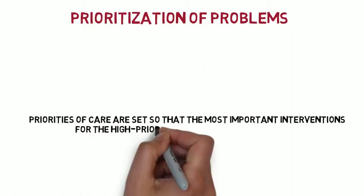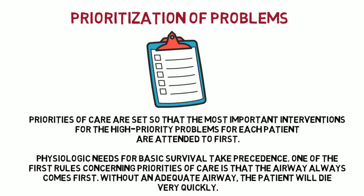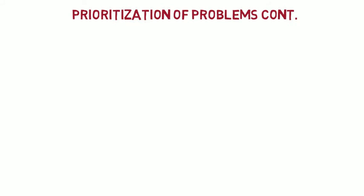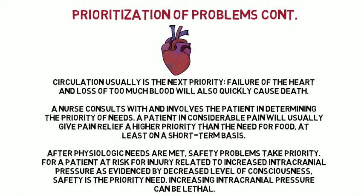Prioritization of problems. Priorities of care are set so that the most important interventions for the high-priority problems for each patient are attended to first. Physiologic needs for basic survival take precedence. One of the first rules concerning priorities of care is that the airway always comes first — without an adequate airway, the patient will die very quickly. Circulation is usually the next priority; failure of the heart and loss of too much blood will also quickly cause death. A nurse consults with and involves the patient in determining the priority of needs. A patient in considerable pain will usually give pain relief a higher priority than the need for food, at least on a short-term basis.